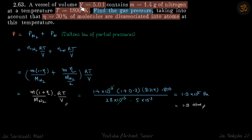We are given a vessel which contains nitrogen gas. 30% of the molecules are dissociated into atoms. We need to find the gas pressure. The volume of the vessel is given, the total mass of nitrogen is given, and the temperature is given.